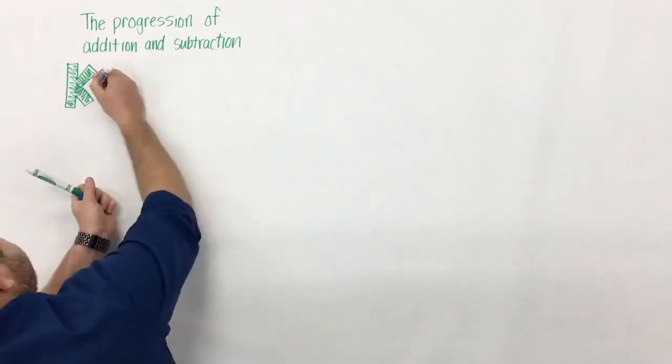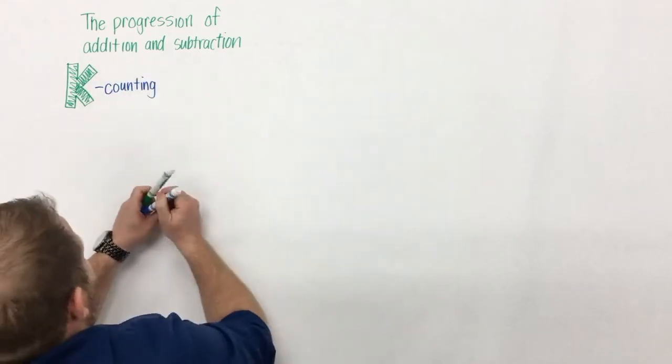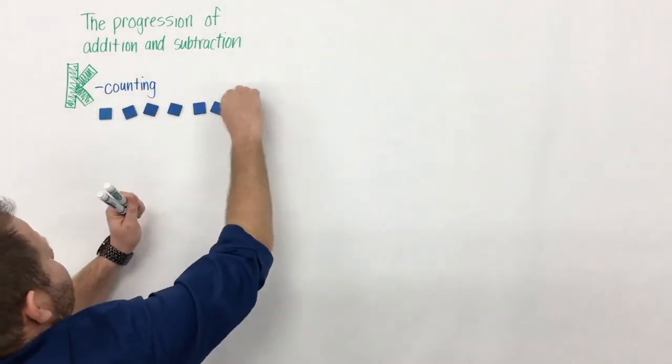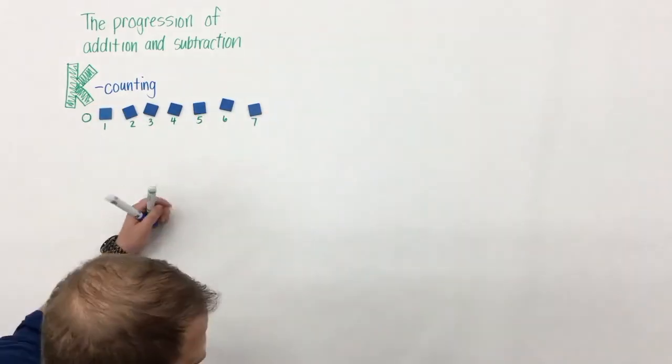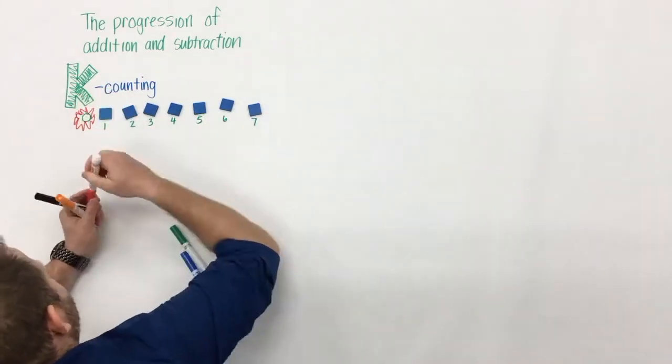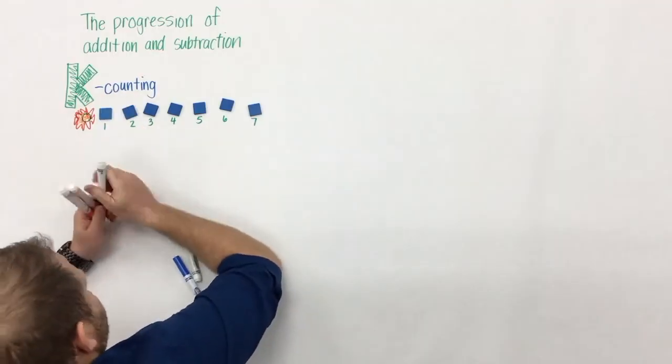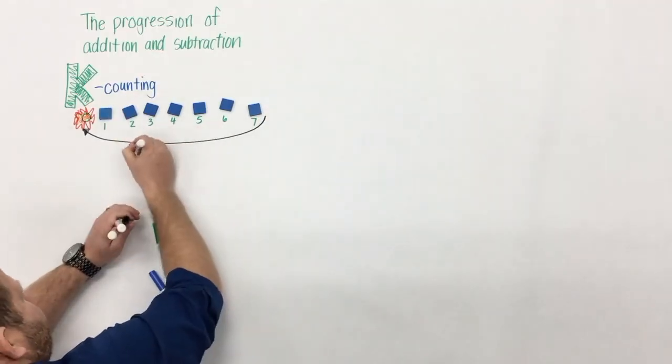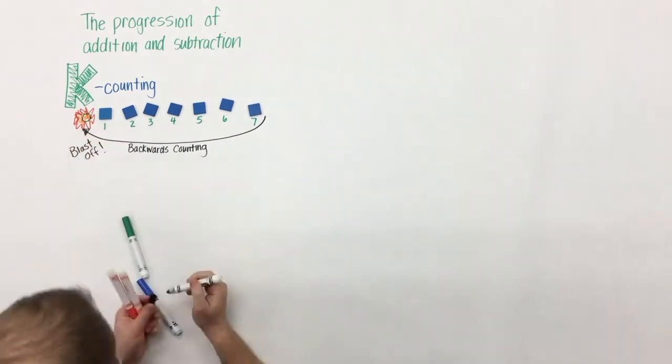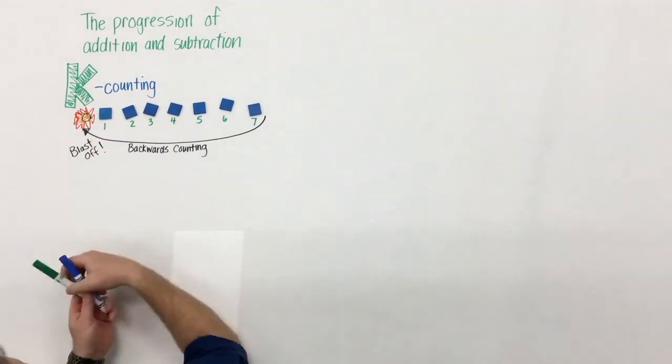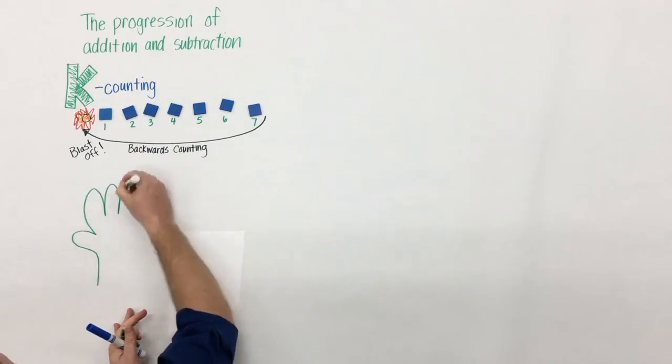Addition and subtraction begin in kindergarten when students begin to count. They begin to count objects and sets. They do this by counting forwards and they also do it by counting backwards. A big thing to remember is when we're counting forwards or backwards that we include the number zero. And when we're counting backwards, let's not have them include blastoff because blastoff isn't necessarily a number.